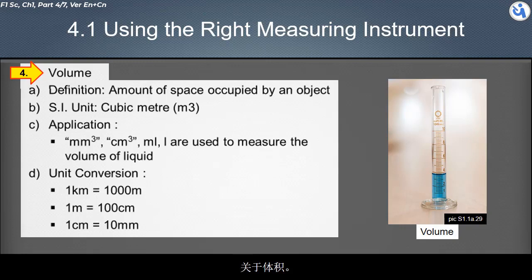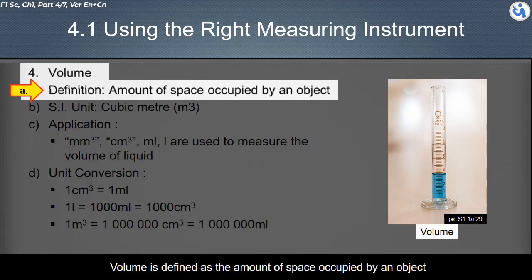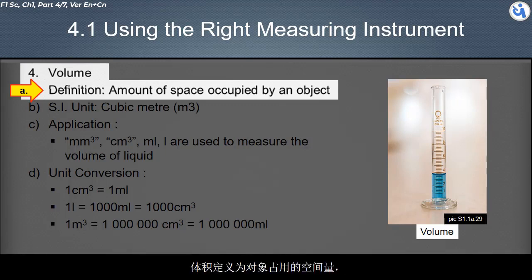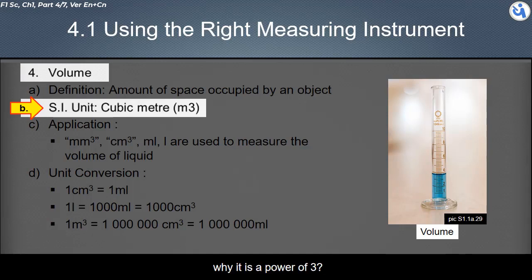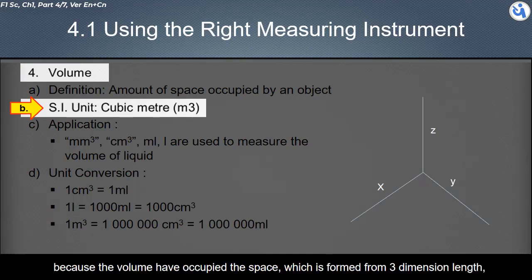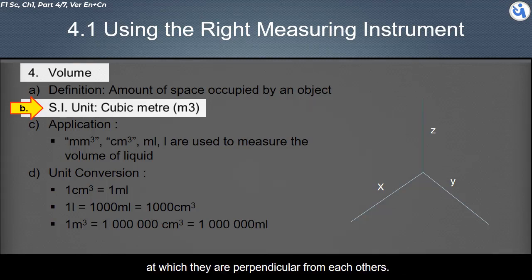About volume. Volume is defined as the amount of space occupied by an object. The SI unit for volume is cubic meter, it is meter power of three. Why it is a power of three? Because the volume have occupied the space, which is formed from three dimension length, at which they are perpendicular from each other's.